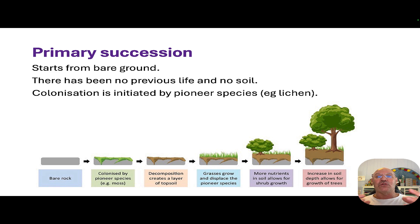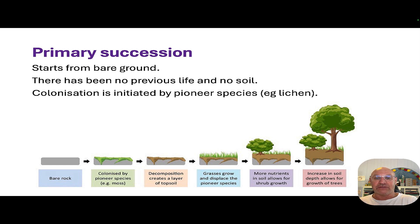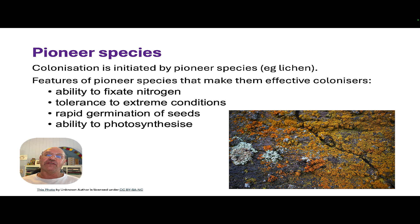So then we've got more soil that can support larger shrubs, and with this we get animal life moving into the area. It continues through a number of cycles of these processes until we get more mature plant life and more mature trees, eventually reaching a stable climax community.